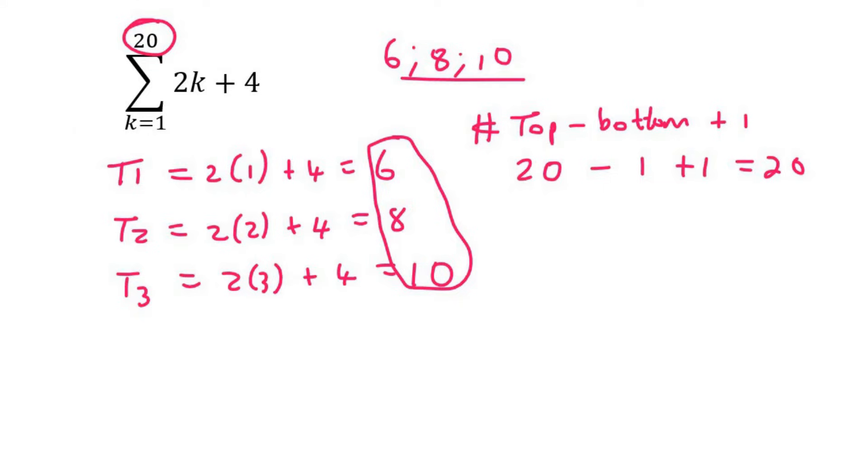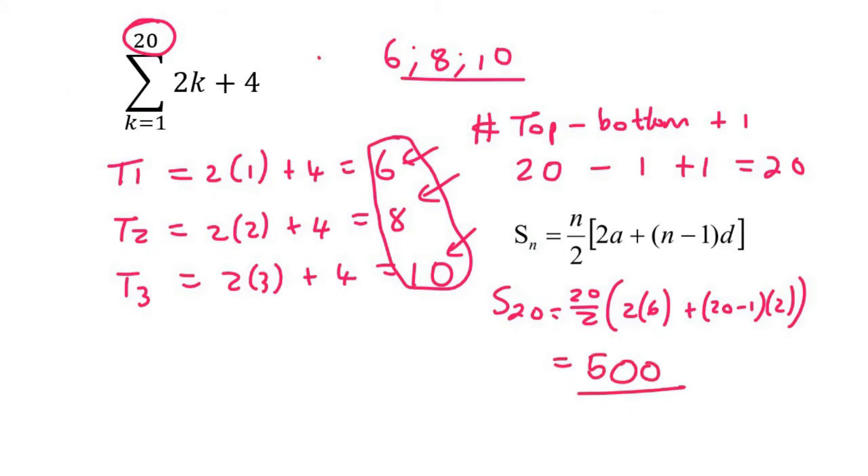All right, so we have 20 terms. We have an arithmetic pattern, and so we can use the sum formula for an arithmetic sequence. We're finding the sum of 20 terms. So we say 20 over 2. A is term one, which we found as 6, and then 20 minus 1. And now the common difference, we're plussing 2 each time, so you can just say 2. It gives us quite a nice number. 500 is the final answer.